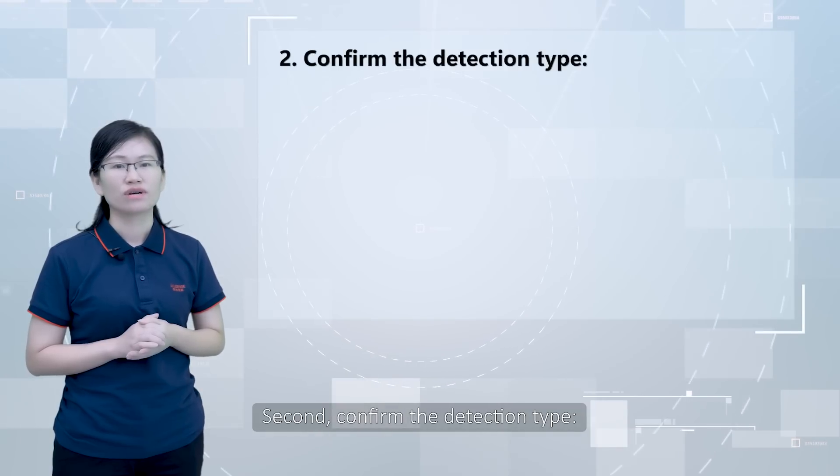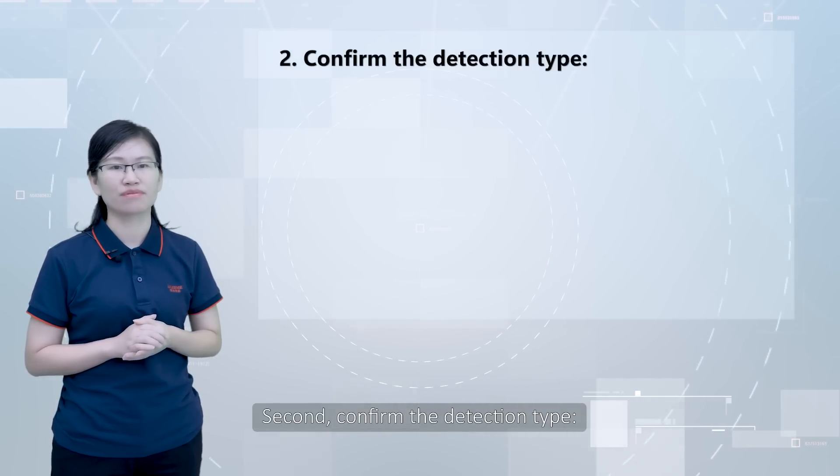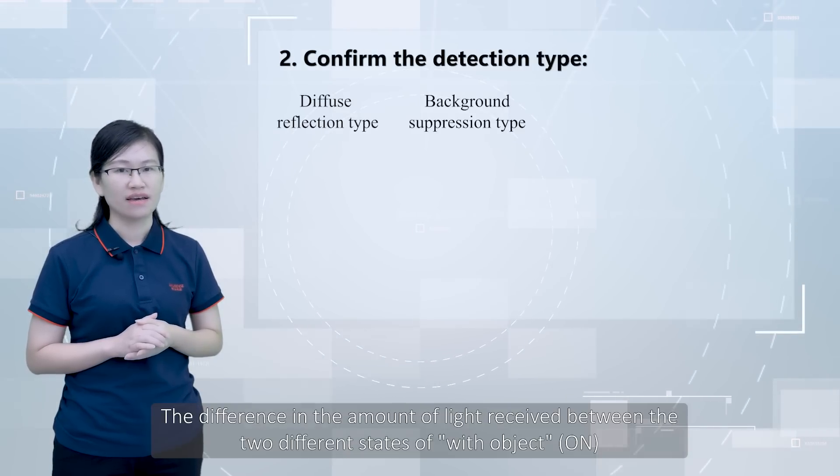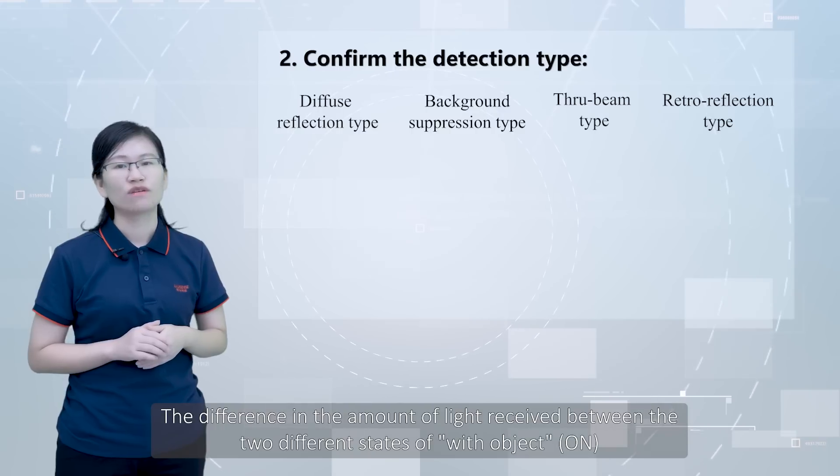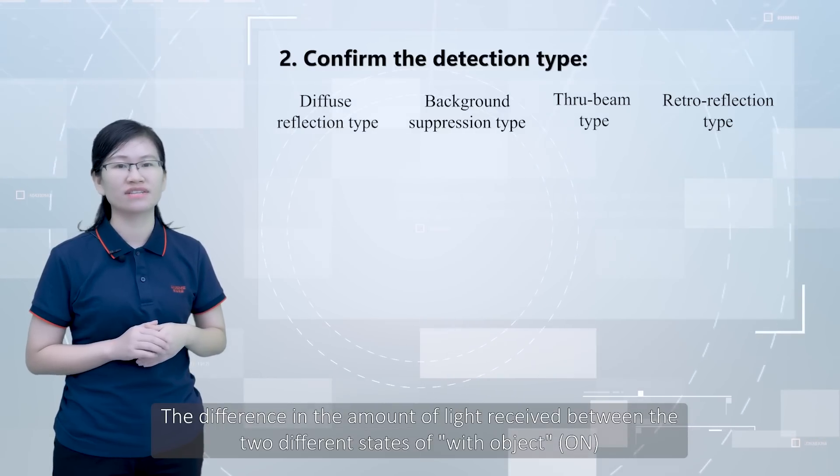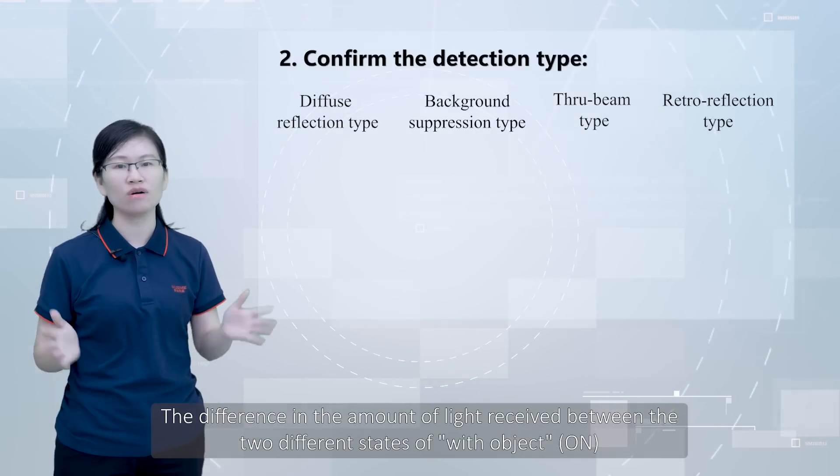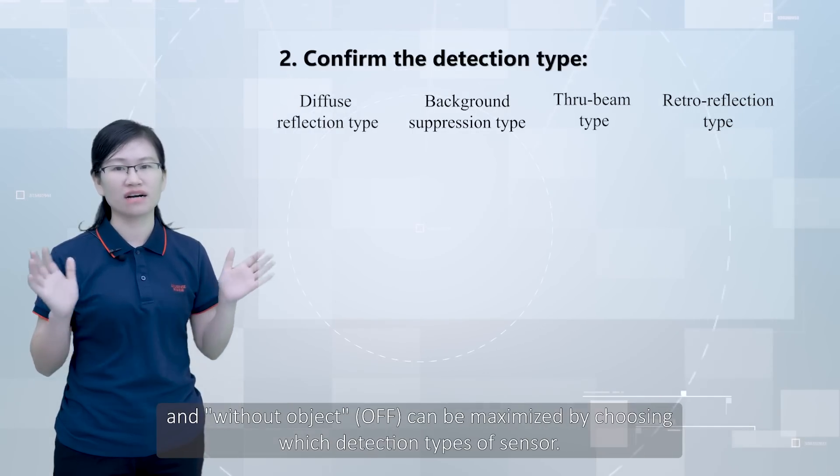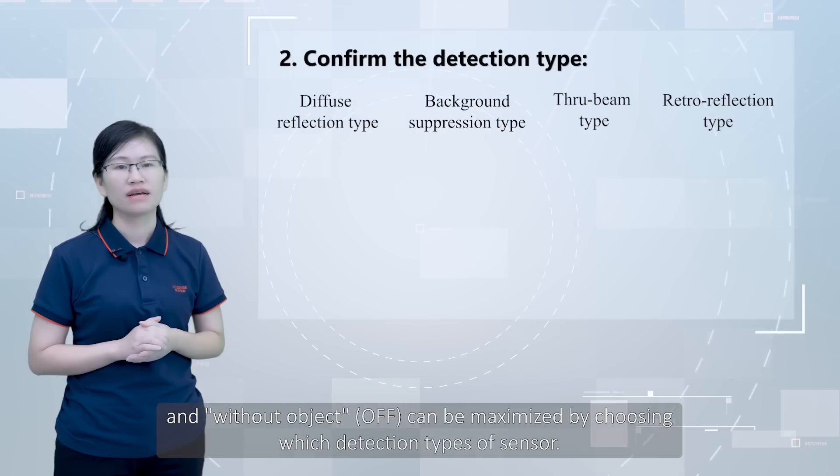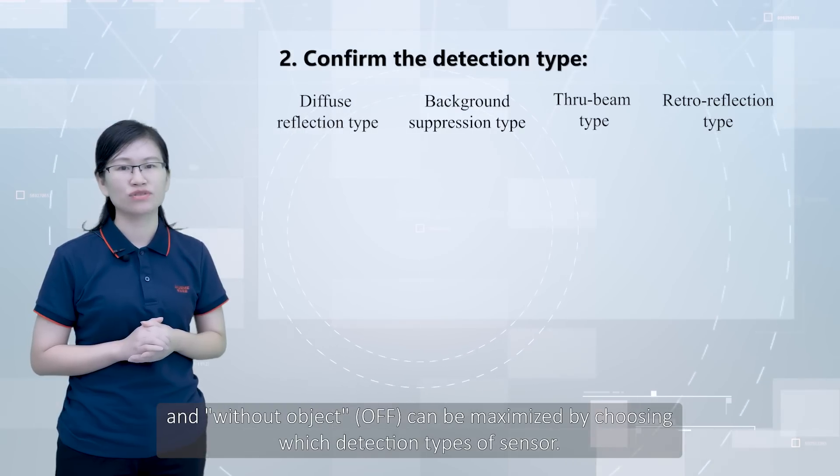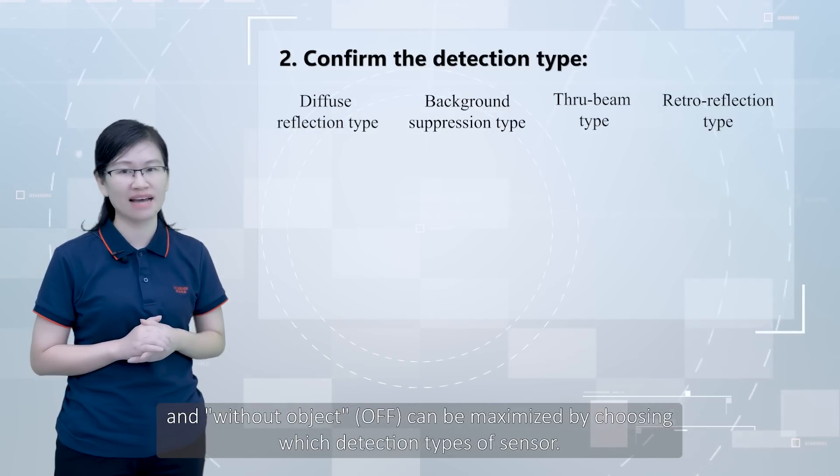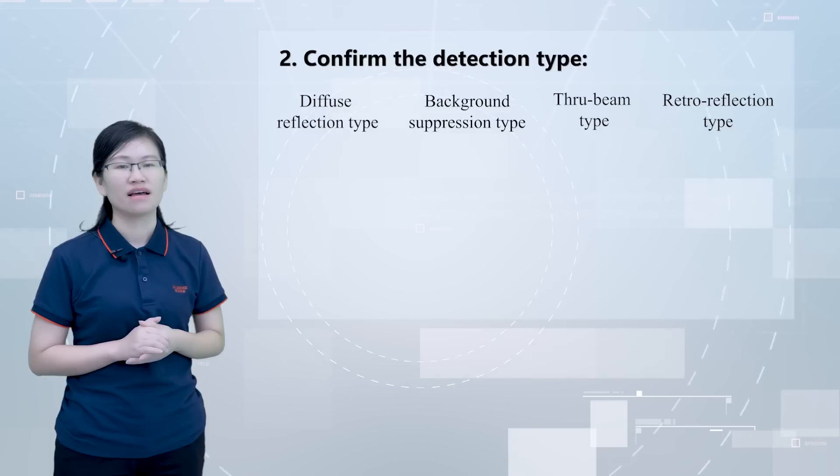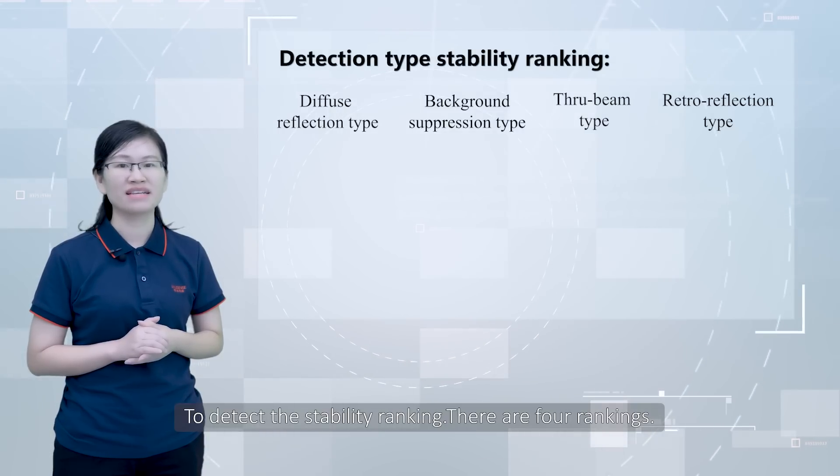The second, confirm the detecting type. The difference in amount of light received between the two different states, with object on and without object off, can be maximized by choosing which detection types of sensors.